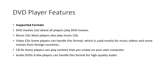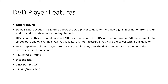DVD player features include supported formats: DVD movies, which nearly all players support; music CDs, which most players play; video CDs, used mostly for music videos and foreign movies; CD-Rs, where some players can play content created on your own computer; and audio DVDs, which a few players handle for high quality audio. Other features include a Dolby Digital Decoder, which allows the DVD player to decode Dolby Digital information from a DVD and convert it into six separate analog channels. This feature is not necessary if you have a Dolby Digital receiver with digital input.